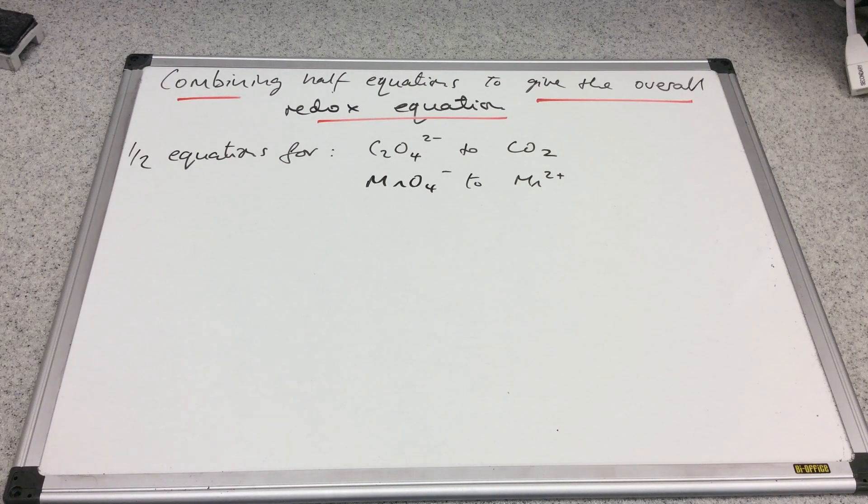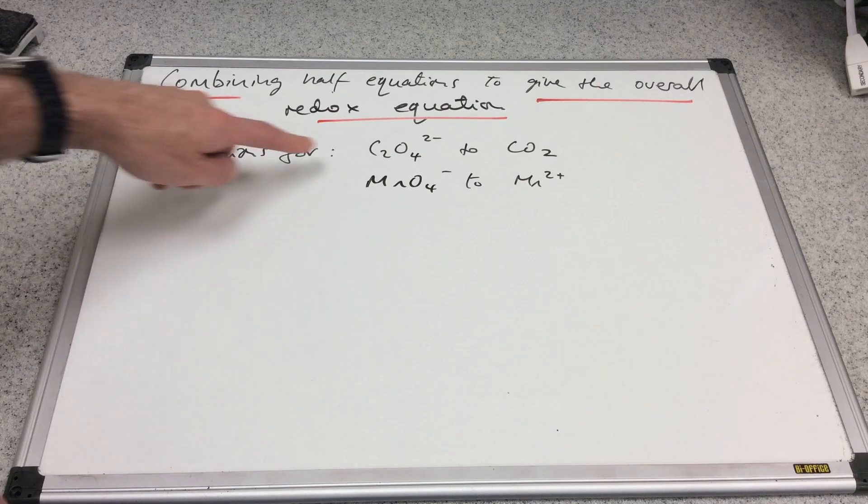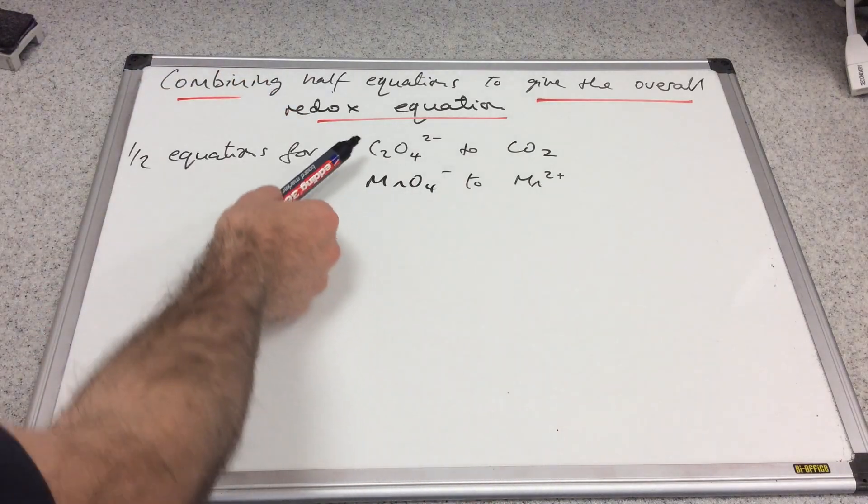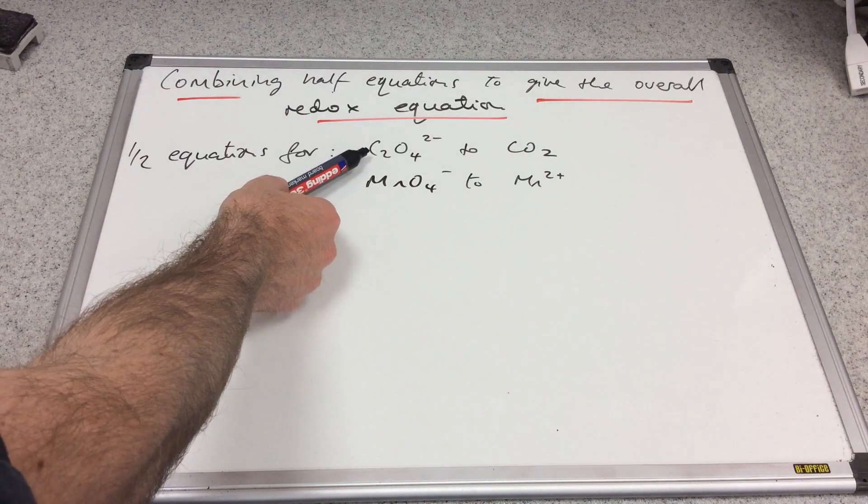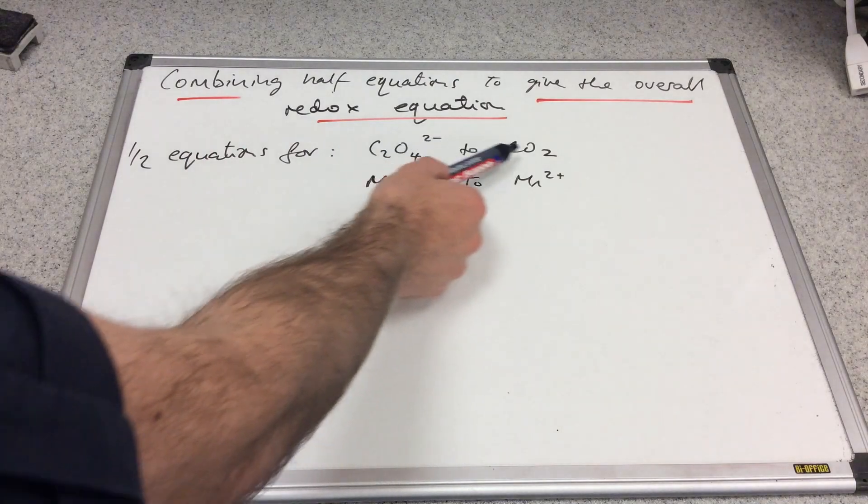We're going to look at how you combine half equations to give the overall redox equation. The first thing we've been asked to do is write half equations for these two processes. We've seen the second one before, but we haven't seen this one yet. This is the ethane dioate ion, and we're going to convert that to carbon dioxide.